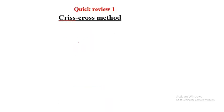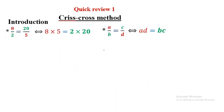Let us start by a quick review. What is the criss-cross method? As we have learned in lower classes, whenever we have two equal ratios, A over B equals C over D, then directly A times D should be equal to B times C.